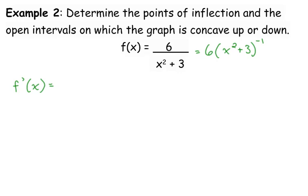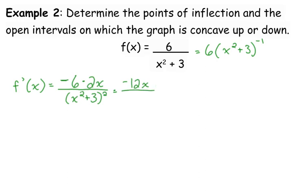So we have low d high. The derivative of the top is 0, so I'll skip that part and say minus high d low, which is 2x, all over low squared. The only thing we really need to do there is multiply the 6 times the 2. Don't multiply out the denominator — there's no point in doing it.